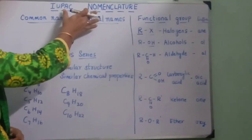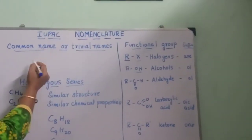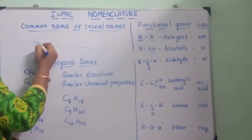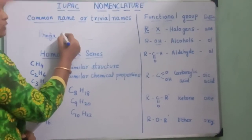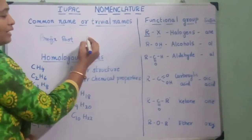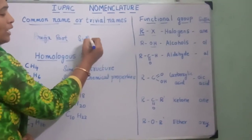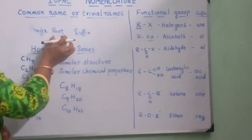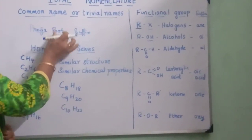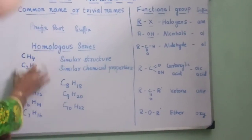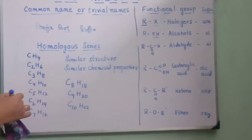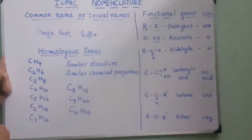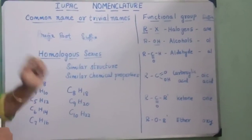The IUPAC nomenclature of an organic compound has three parts. The first part is called the prefix, the second part is called the root name or parent name, and the third is the suffix. We have already seen the suffix, which holds the functional group. To determine the root word, we have to learn the names of the first members of the homologous series of alkanes.